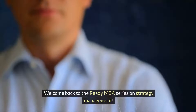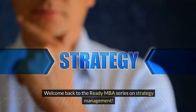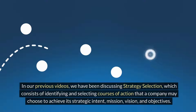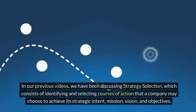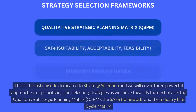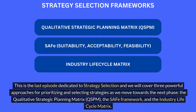Welcome back to the Ready MBA series on strategy management. In our previous videos, we have been discussing strategy selection, which consists of identifying and selecting courses of action that a company may choose to achieve its strategic intent, mission, vision, and objectives. This is the last episode dedicated to strategy selection, and we will cover three powerful approaches: the Qualitative Strategic Planning Matrix (QSPM), the SAFE Framework, and the Industry Lifecycle Matrix.